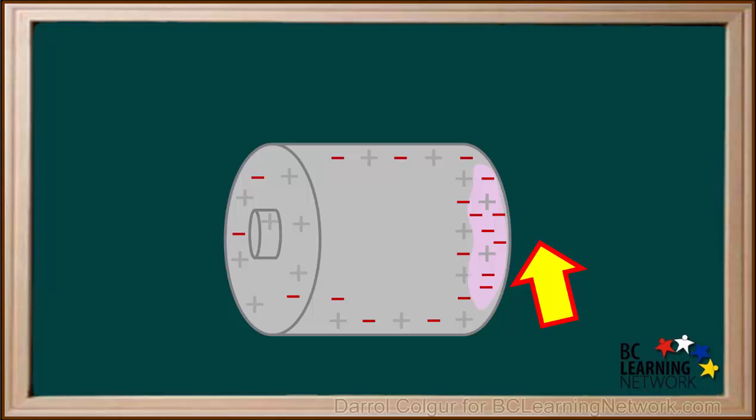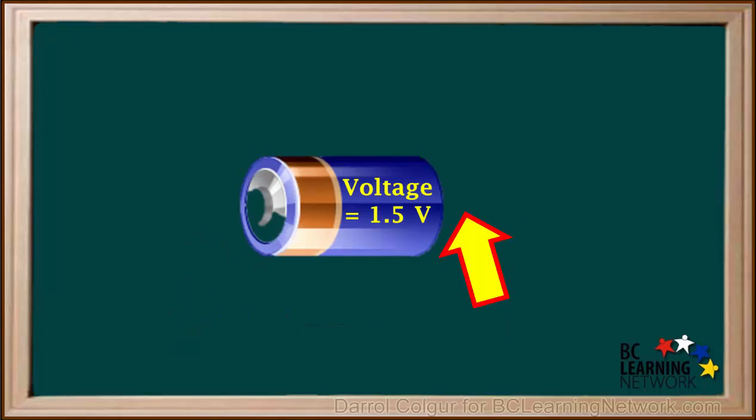Because the smooth end of a cell has an excess of electrons, it has a negative charge. And because the bumpy side of the cell has a deficiency of electrons, it has a positive charge. So when a cell has a bumpy side and a smooth side, the smooth side is always negative, and the side with the bump is always positive.